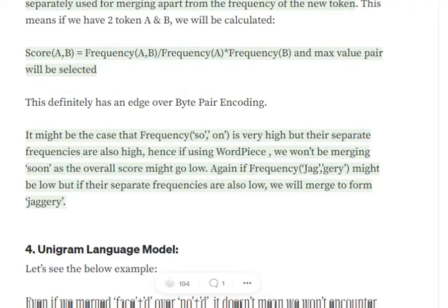It might be the case that the pair 'so' and 'on' has a very high combined frequency and might get merged in byte pair encoding. But using WordPiece, we might not merge them, because the individual frequencies of 'so' and 'on' are also high separately, making the score for that pair low.